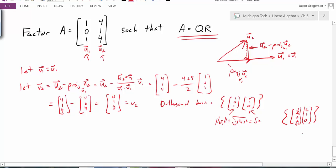So these are my two new basis vectors. Now this is an orthonormal basis for the column space of A. So these turn out to be the columns for my matrix Q. So this will be my matrix Q.